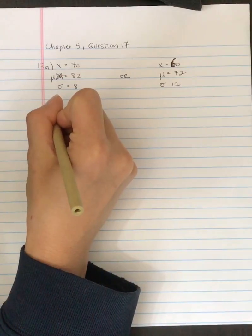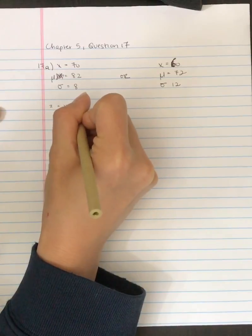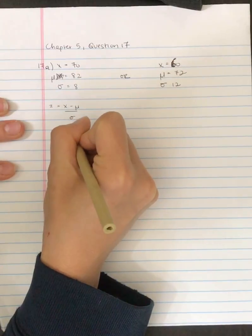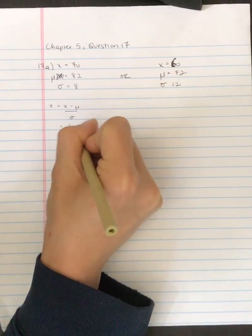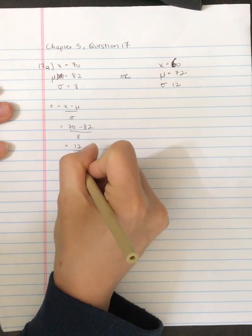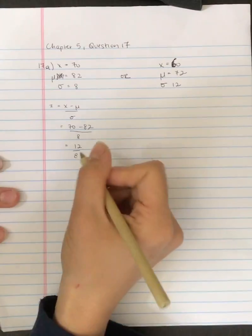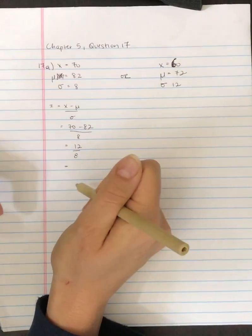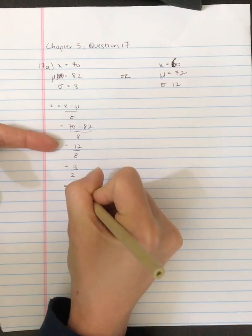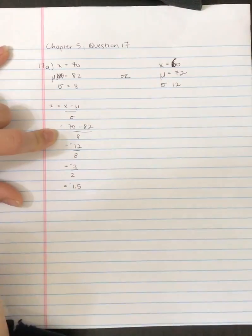So the formula for the z-score that we're going to use is X subtract the mean divided by the standard deviation. So we're going to have 70 subtract 82 divided by 8 which gives us negative 12 divided by 8 and I've forgotten my calculator so I'm just going to reduce that down. If we divide the top by 4 that gives us 3 out of 2 which gives us 1.5 and I'll pause here it's actually negative 1.5.